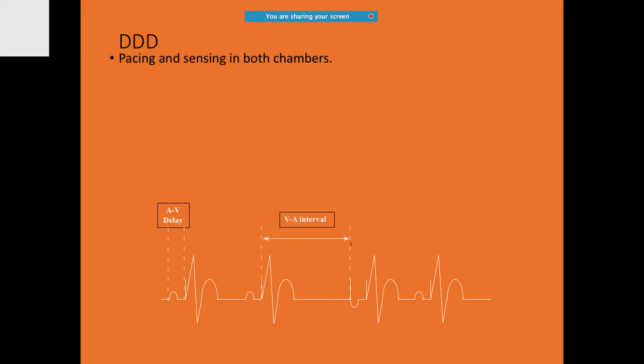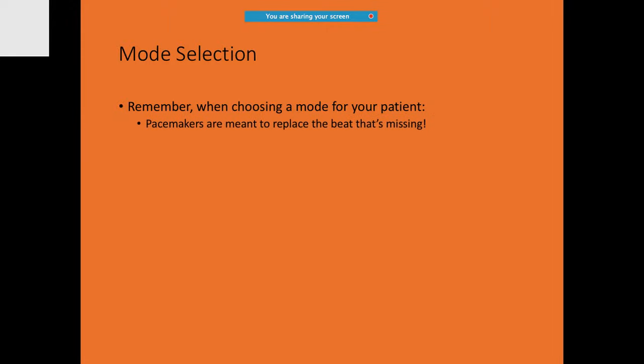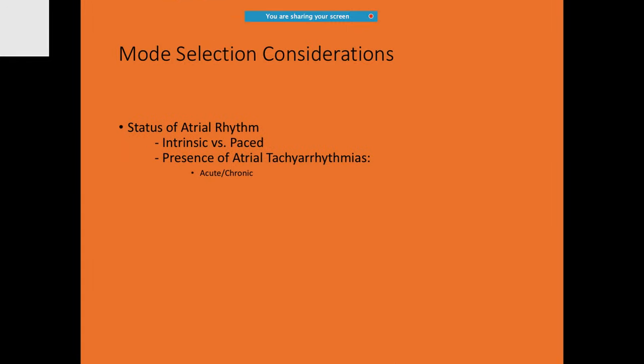Another classical DDD ECG example: the first complex is a normal sinus beat, the second has only the atrium paced, in the third both atrium and ventricle are paced, and in the last beat only the ventricle is paced. In DDD, AV synchrony is achieved even if sinus activity stops. Mode selection always depends on the condition of the patient — the status of the atrial rhythm, whether intrinsic or paced, and presence of atrial tachycardias.